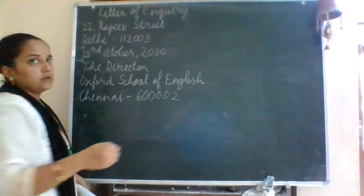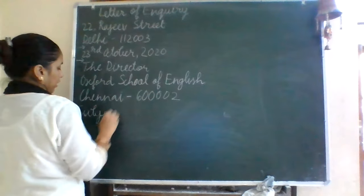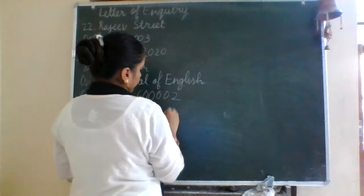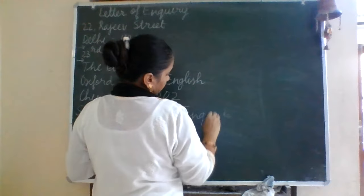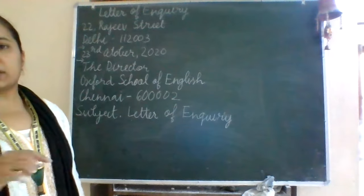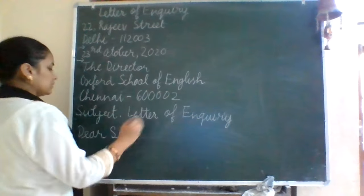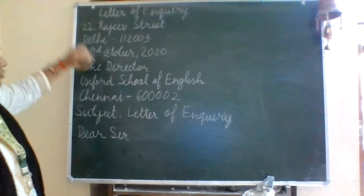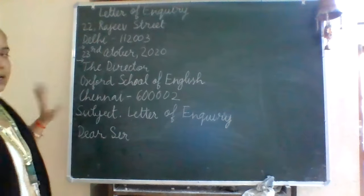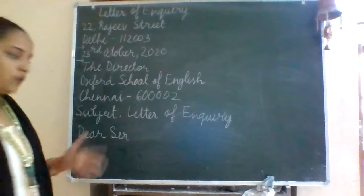This is the address. Now we will write the subject. For the subject you can write the same thing: Letter of Inquiry. And after that the greetings or the salutation. So these are all the initial things: the sender's address, date, the receiver's designation, receiver's address, subject, and the salutation. After this we will begin with the body of the letter where we will explain why we are writing the letter.